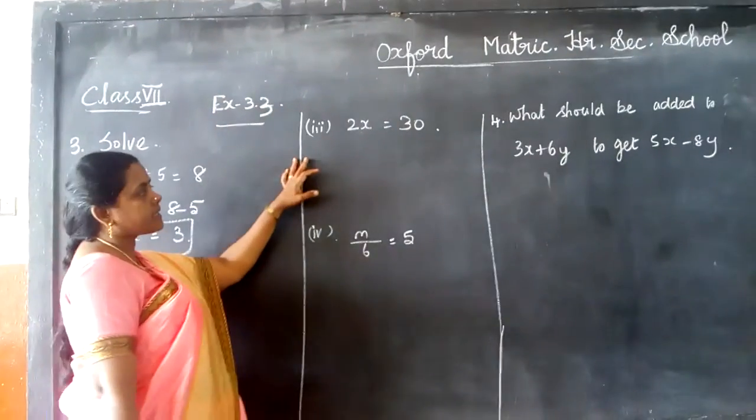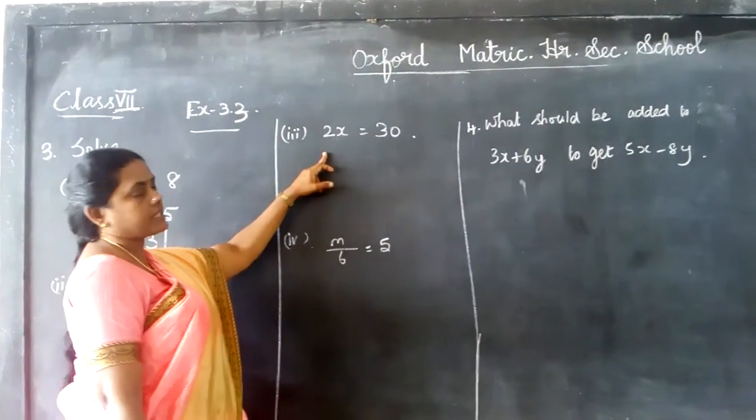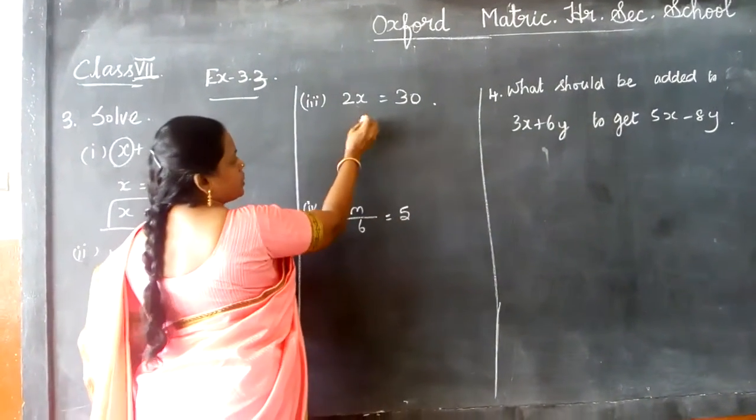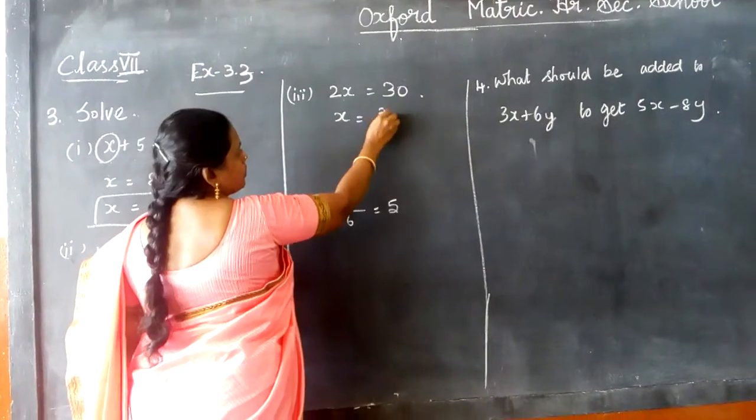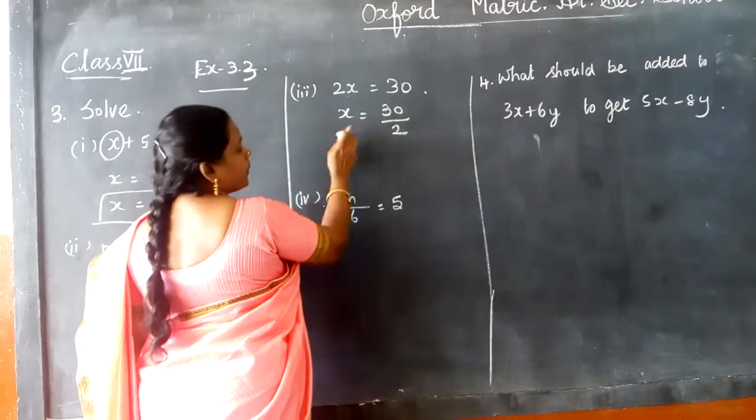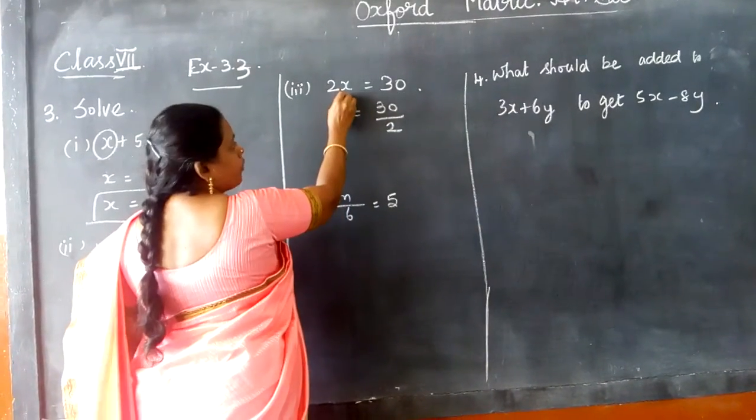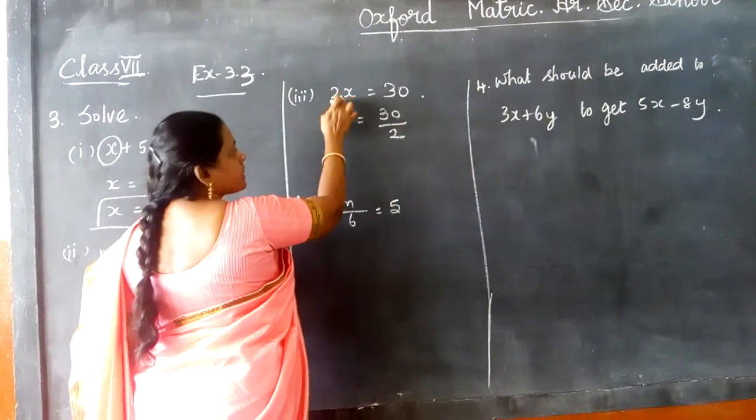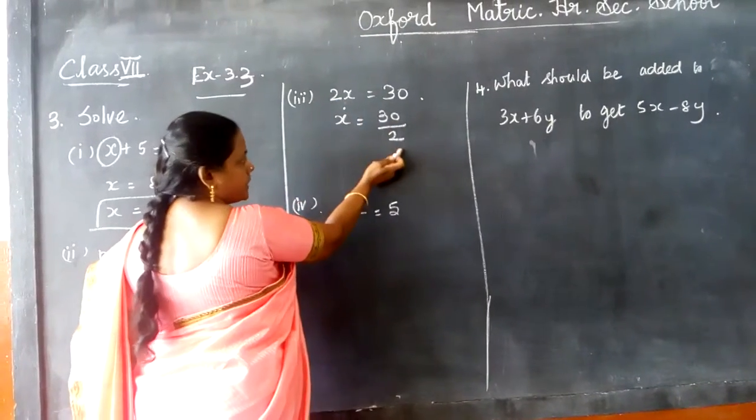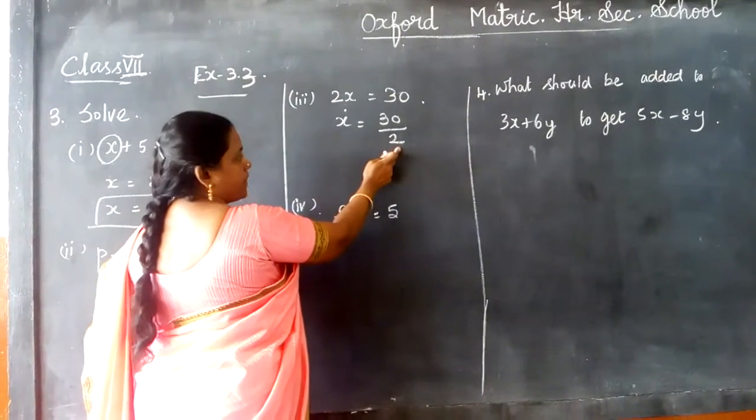Now the third question is 2x equals 30. Now this 2 is in multiplication, therefore x equals 30 by 2. Why am I bringing it here? Because when this is a multiplication, when it goes to that side, it will go in division.